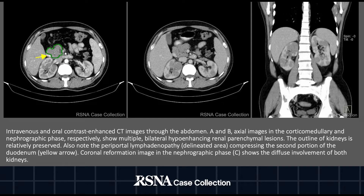There is also periportal lymphadenopathy, delineated in green in image A, that is causing compression of the second portion of the duodenum as demonstrated by the yellow arrow. Coronal reformation image in the nephrographic phase, image C, also shows the diffuse involvement of the kidneys.